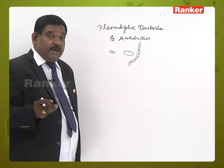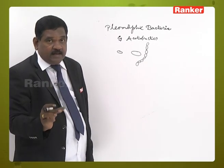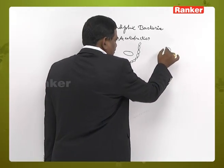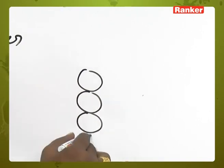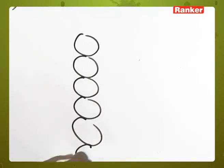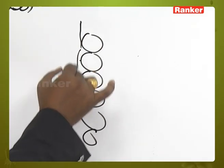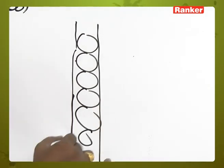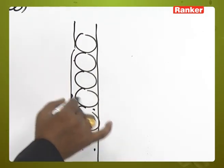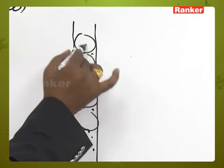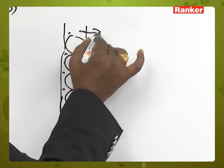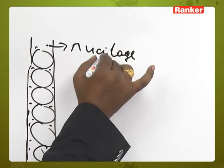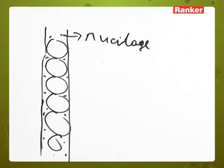Some bacteria are arranged in a chain — a long chain. Spiral-shaped bacteria are held together with mucilage. They are bound with the mucilage, and so they look like a chain.